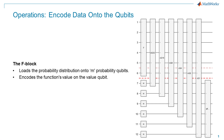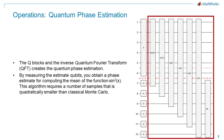Let's do a quick recap of the circuit blocks implemented. The F block loads the probability distribution into m probability qubits and encodes the function mean value to the value qubit. The Q blocks and the inverse quantum Fourier transform, QFT, create the quantum phase estimation. The algorithm achieves a speedup by needing only a quadratically smaller number of samples compared to classical Monte Carlo to compute the mean within a specific error bound.